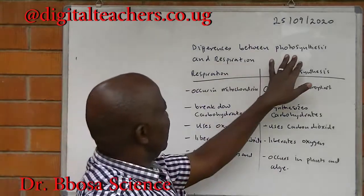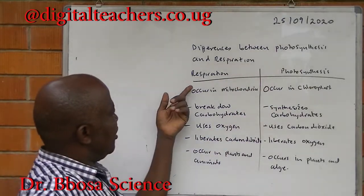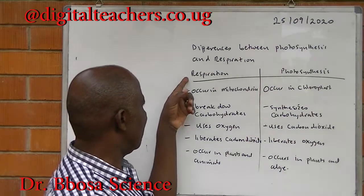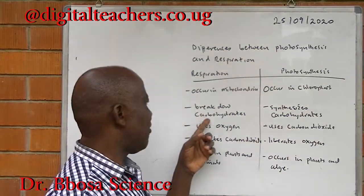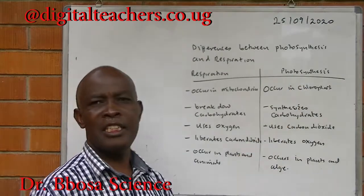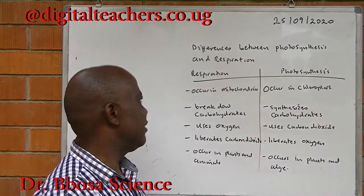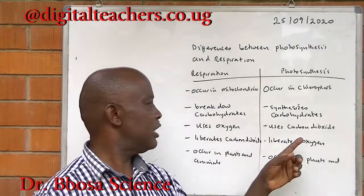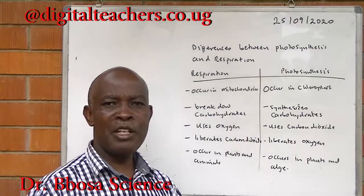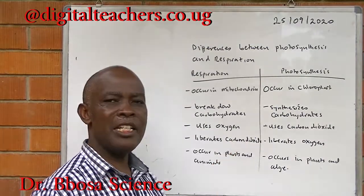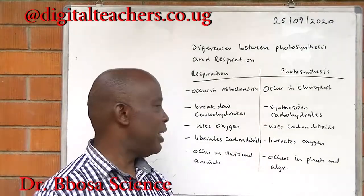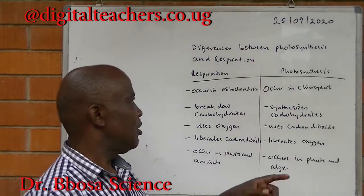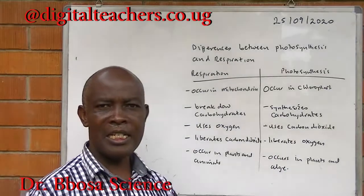Differences between photosynthesis and respiration: respiration occurs in the mitochondria, while photosynthesis occurs in the chloroplast. Respiration breaks down carbohydrates; photosynthesis synthesizes carbohydrates. Respiration uses oxygen; photosynthesis uses carbon dioxide. Respiration liberates carbon dioxide; photosynthesis liberates oxygen. Respiration occurs in plants and animals; photosynthesis occurs in plants and algae.